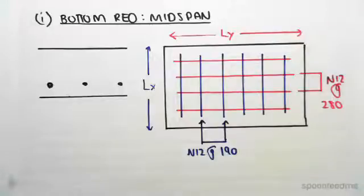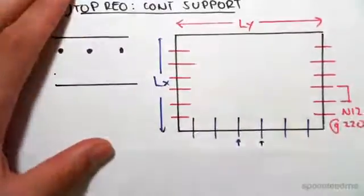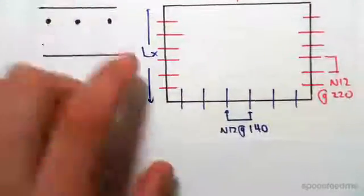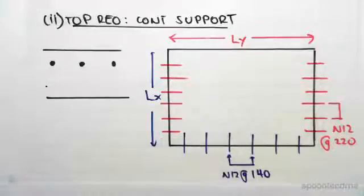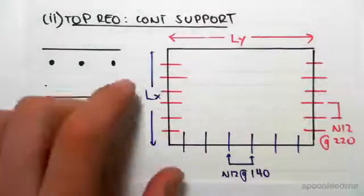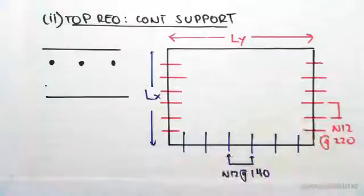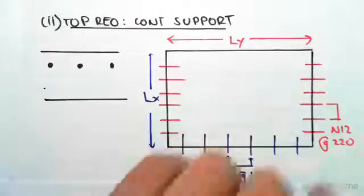Number two, which is the top reinforcing at a continuous support. We have a diagram that looks something like this. For slab number two, it's continuous there, there, and there, so we need to find the top reinforcing along these three edges. The reason it's top reinforcing is because at the support our slab will be hogging, which means that the top is now in tension, so the steel needs to be at the top of the slab.